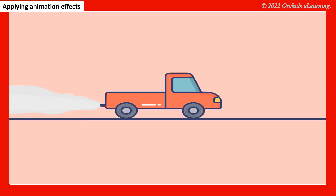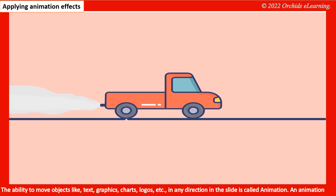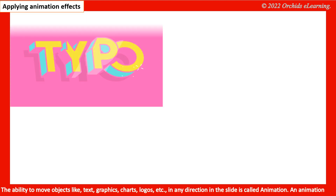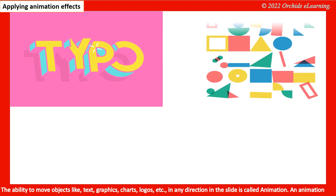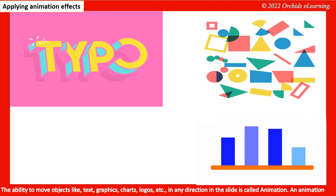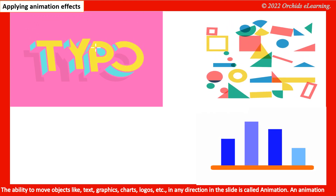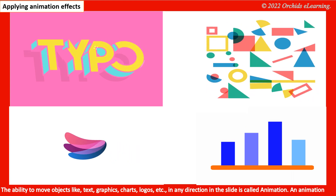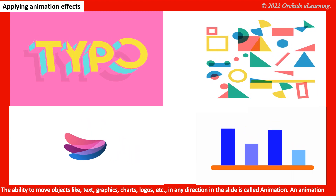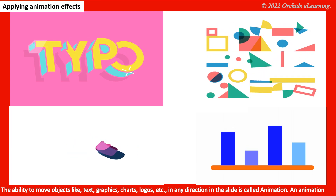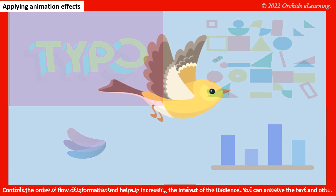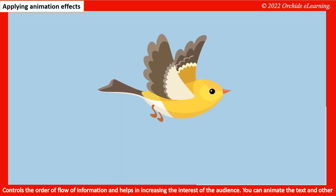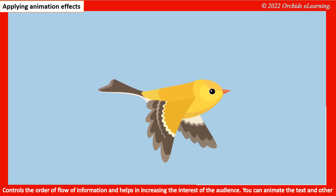Applying Animation Effects. The ability to move objects like text, graphics, charts, logos, etc. in any direction in the slide is called animation. An animation controls the order of flow of information and helps in increasing the interest of the audience.